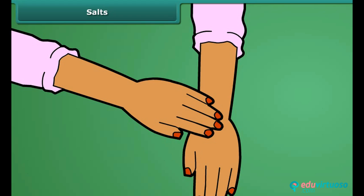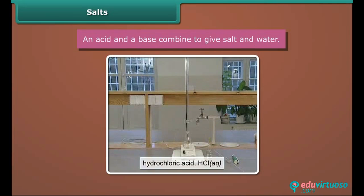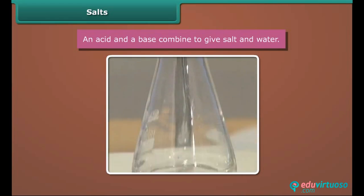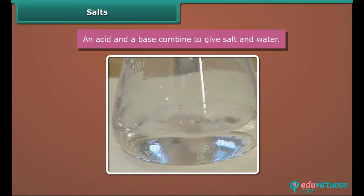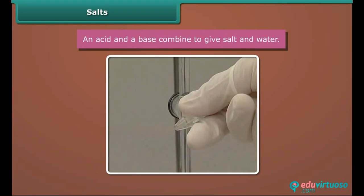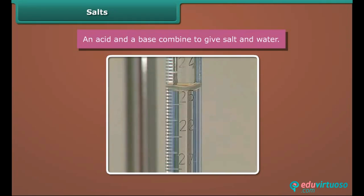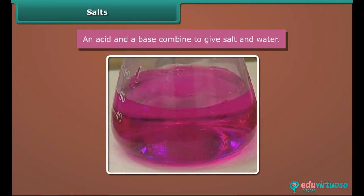Now let us find out what happens when an acid is mixed with a base. An acid and a base combine to give salt and water. In this experiment, we add phenolphthalein to dilute hydrochloric acid — the indicator remains colorless in the acidic solution. When we add sodium hydroxide solution in small portions, at a certain point the indicator changes color, meaning the acid is completely neutralized by the sodium hydroxide and some excess hydroxide ions are present. The reaction produces salt — sodium chloride — and water.